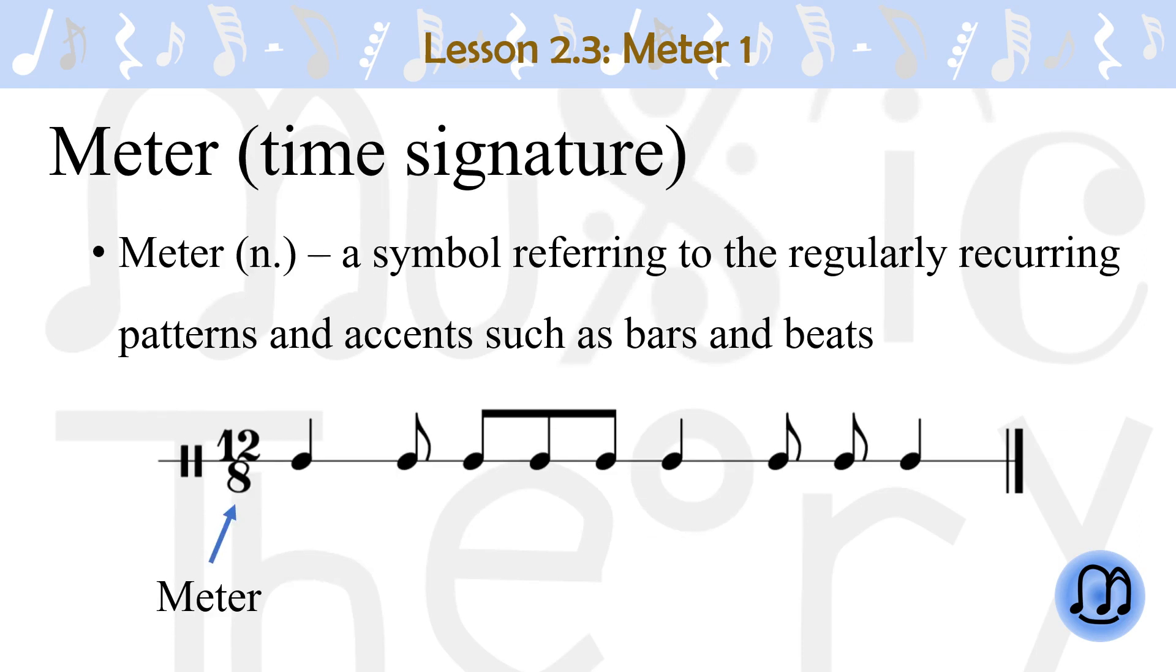A meter, also called a time signature, is a symbol referring to the regularly recurring patterns and accents such as bars and beats. In other words, it tells you how long each beat is and how many beats are in a bar.